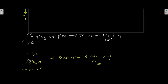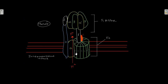The gamma-epsilon-C9-to-12 ring complex is the rotor — the moving unit. The AB2-alpha3-beta3-delta complex is the stator — the stationary unit. So in ATP synthesis you have a moving unit and a stationary unit.